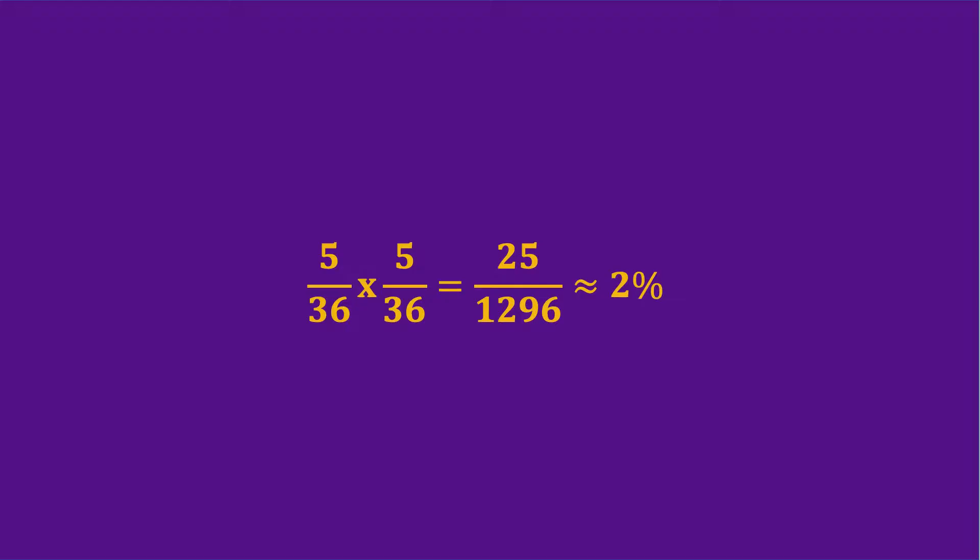Second, sometimes we will deal with multiple events, and most of the time they will be independent. That is, the outcome of one will not have any impact on the outcome of the second. When this happens, we can simply multiply the two probabilities together. So what is the probability of obtaining 8 throwing 2 dice, twice in a row? 5 over 36 times 5 over 36, or roughly 2%. This is because the first throw did not have any impact on the second one.